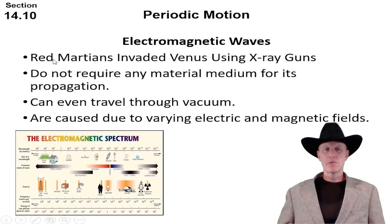Let's start with electromagnetic waves. I like to remember all these waves by remembering the sentence: red martians invaded Venus using x-ray guns. Radio waves, microwaves, infrared, visible light, ultraviolet, x-ray, and gamma rays are the examples of electromagnetic waves. These do not require any material medium for propagation and can even travel through a vacuum. Electromagnetic waves are caused due to varying electric and magnetic fields.